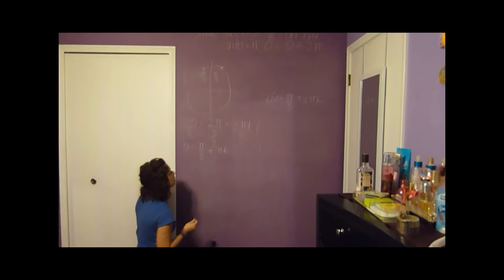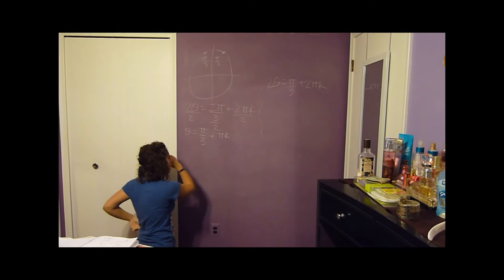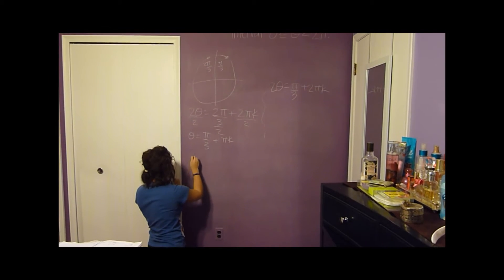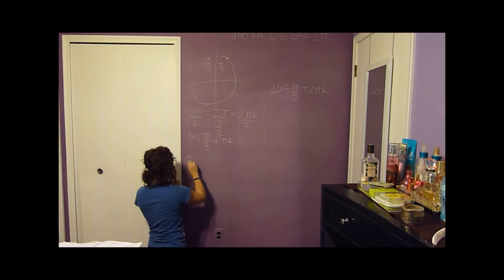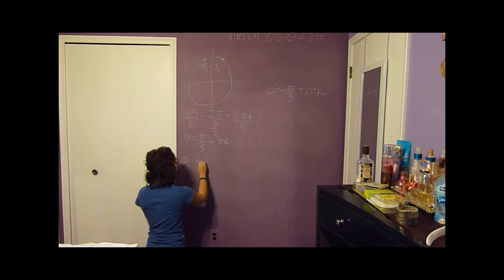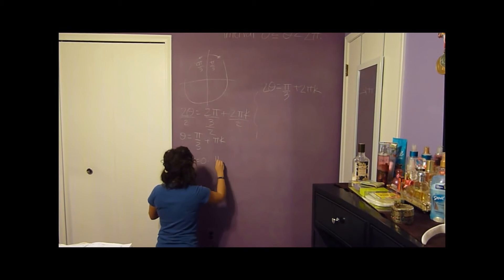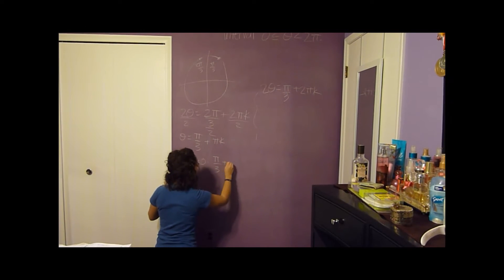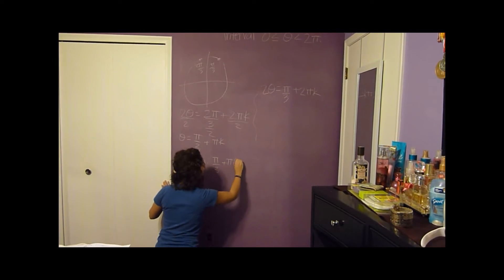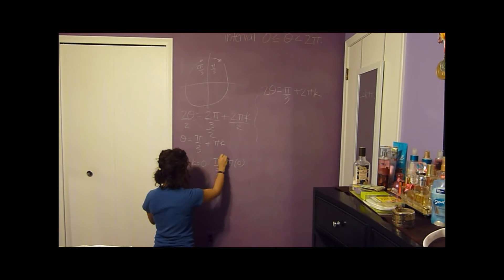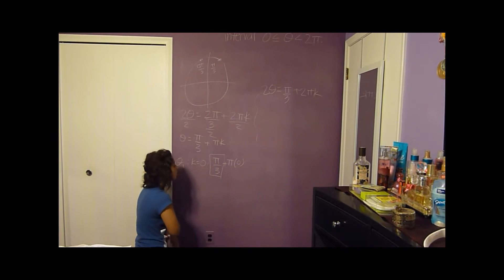And we can plug in some integers for k, so we can plug in 0. So theta 1, k equals 0, pi over 3 plus pi times 0, it would just be pi over 3.